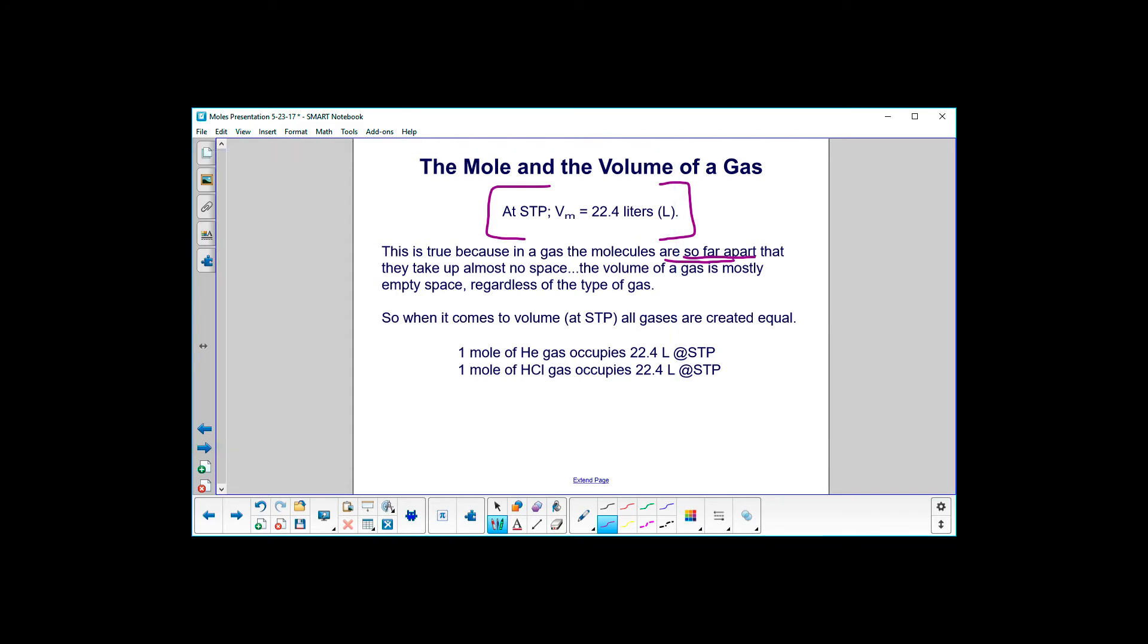So when it comes to volume at STP, all gases are created equal. One mole of helium gas occupies 22.4 liters at STP, and one mole of HCl gas occupies 22.4 liters at STP.